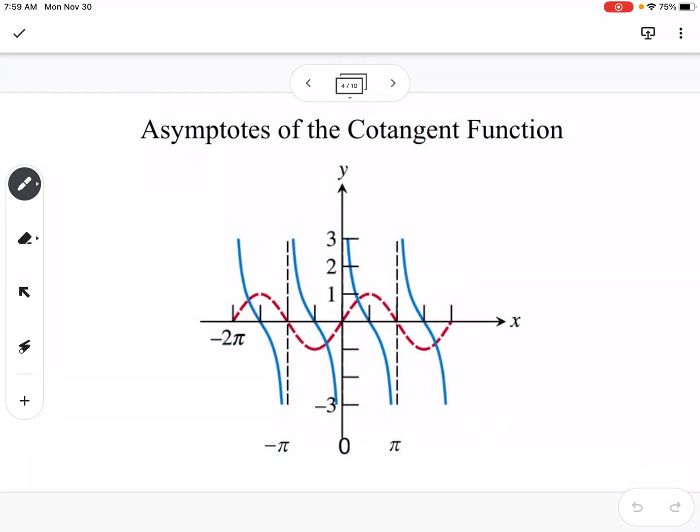So now cotangent. Cotangent, instead of rising like tangent does, it's going to fall from left to right, and we can think of the same thing. Cotangent is the reciprocal of tangent, or we can say it's cosine over sine, or we can think of it as x over y.